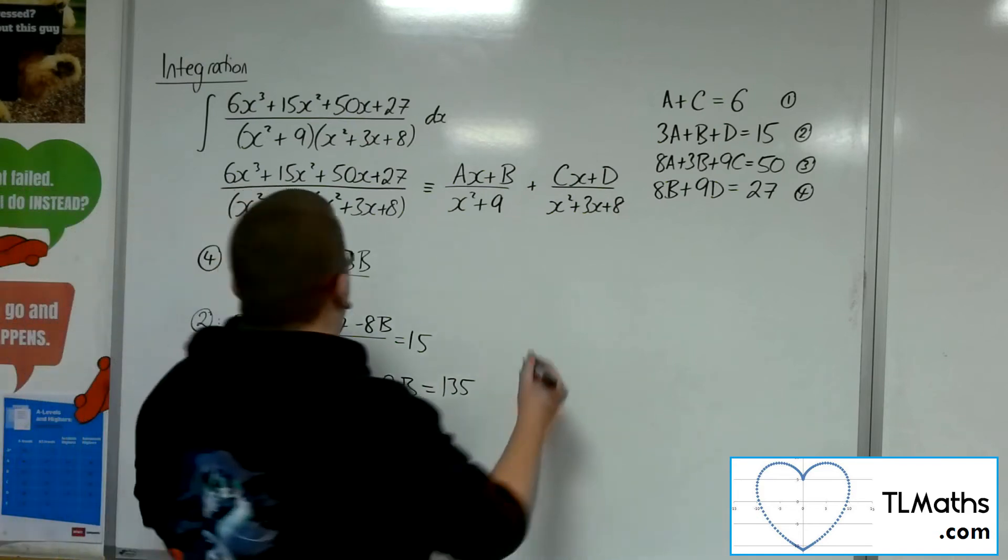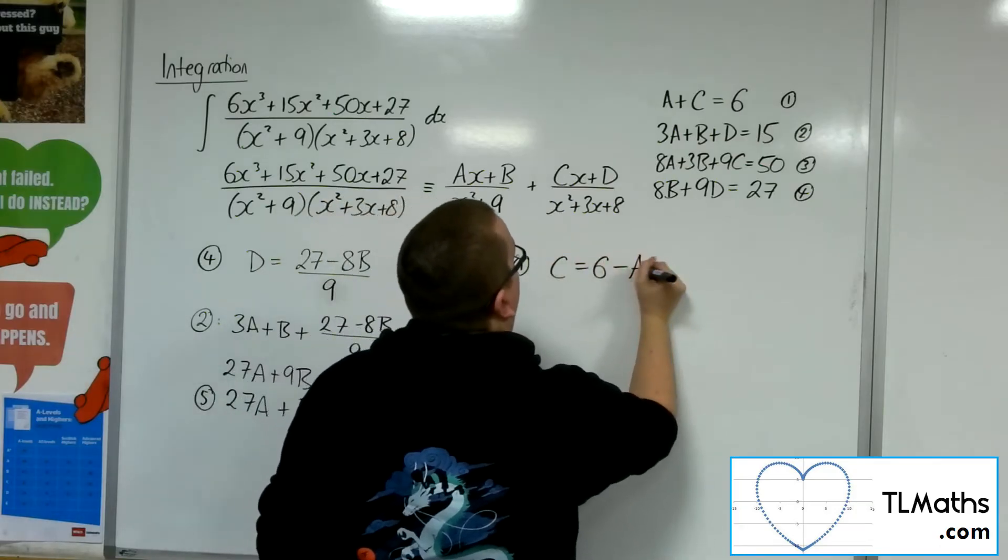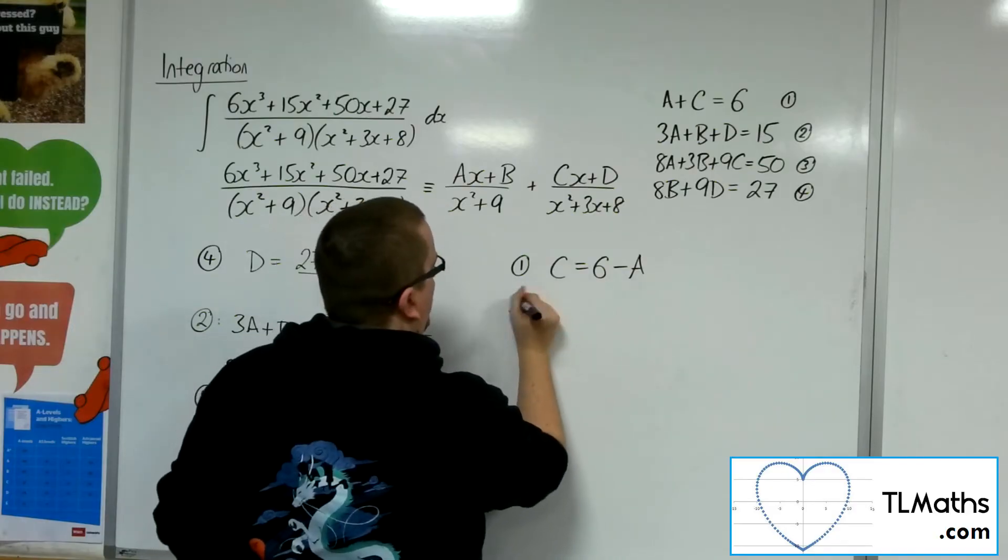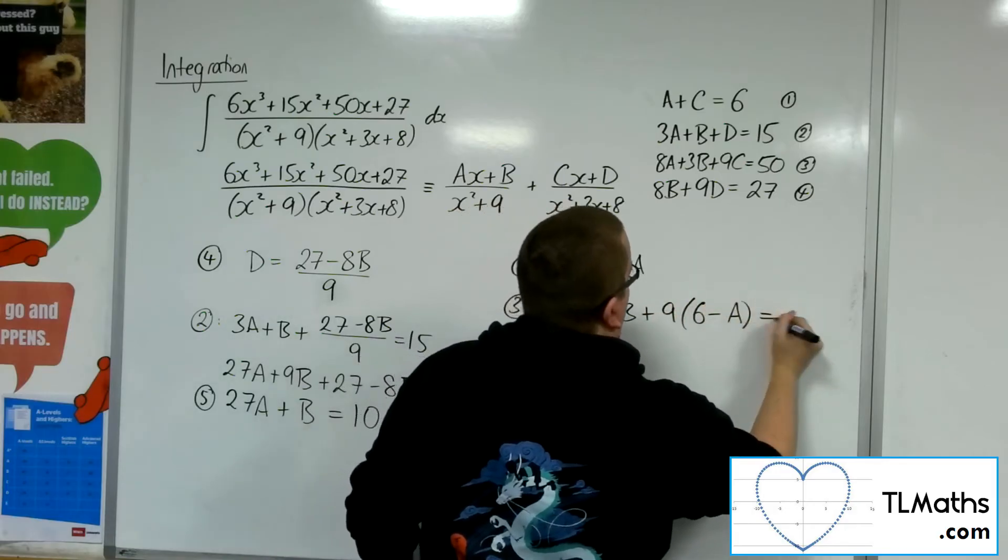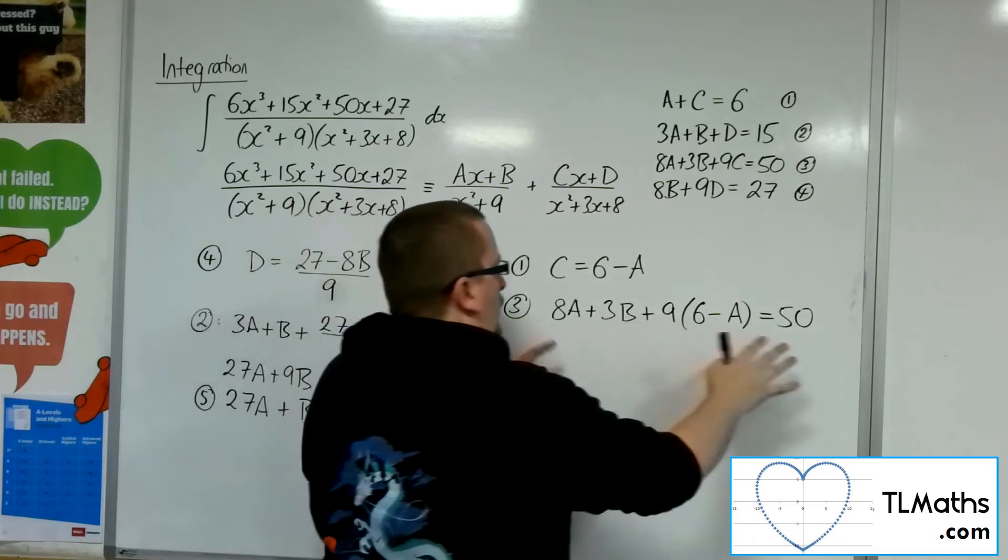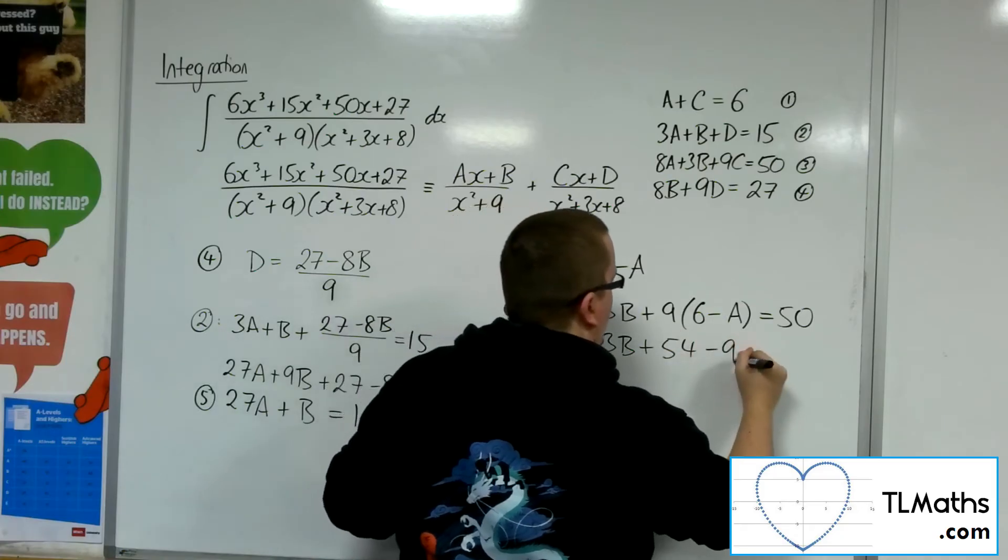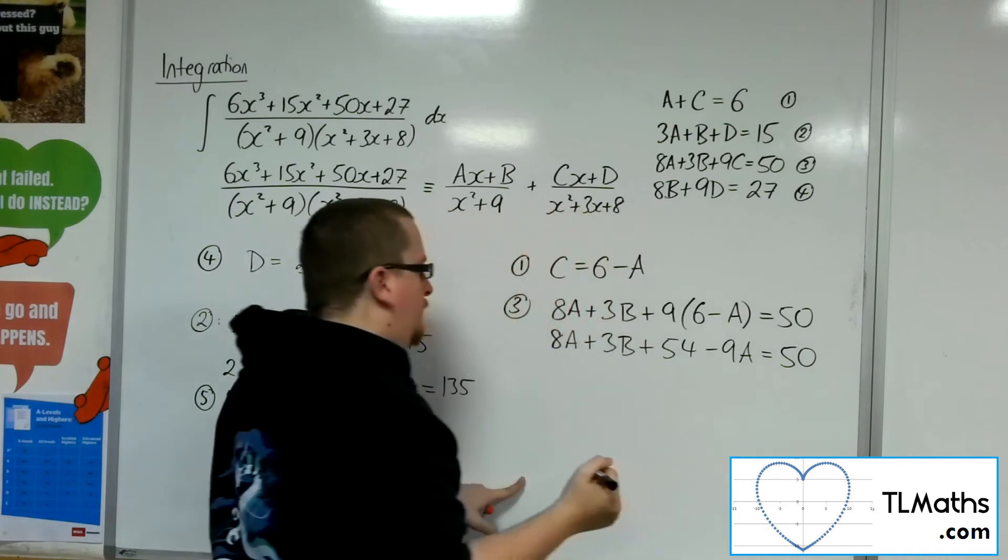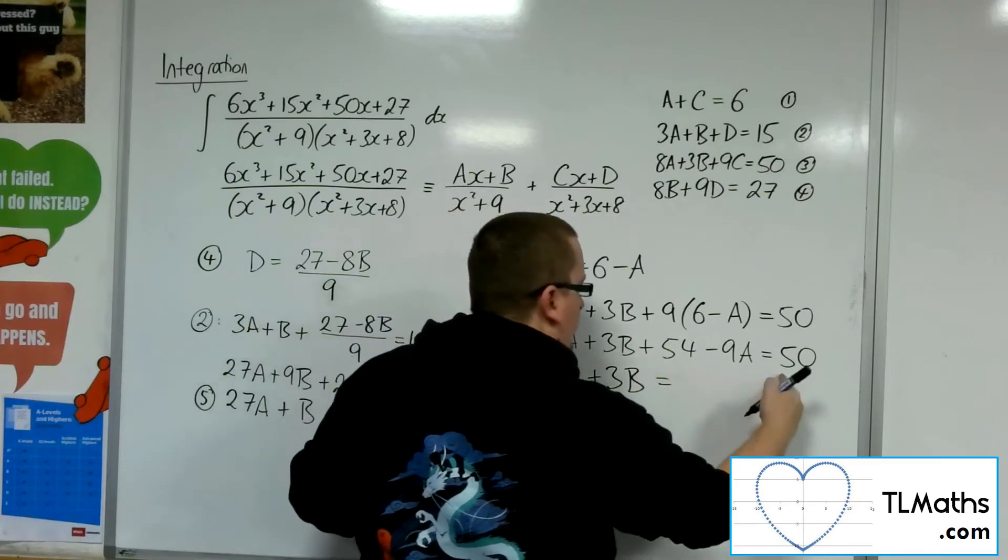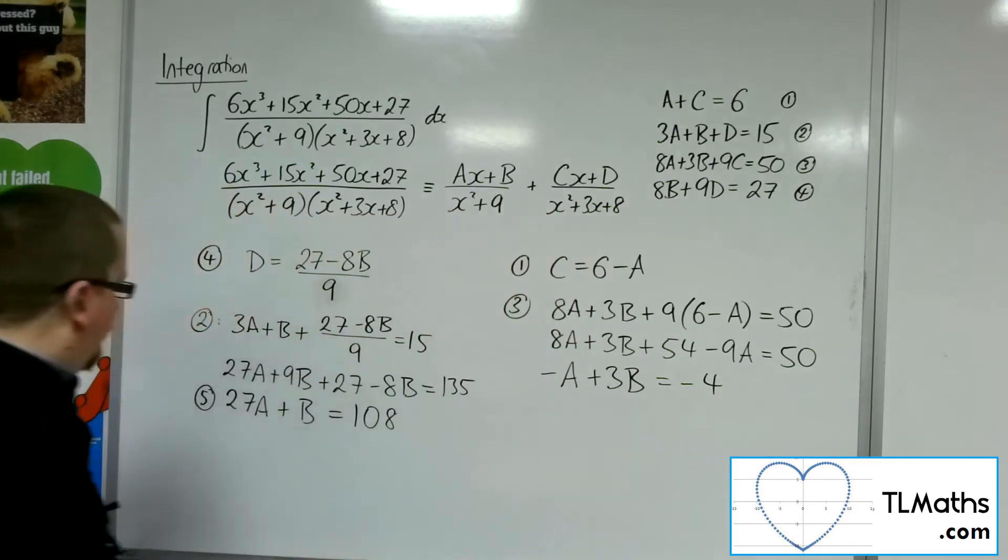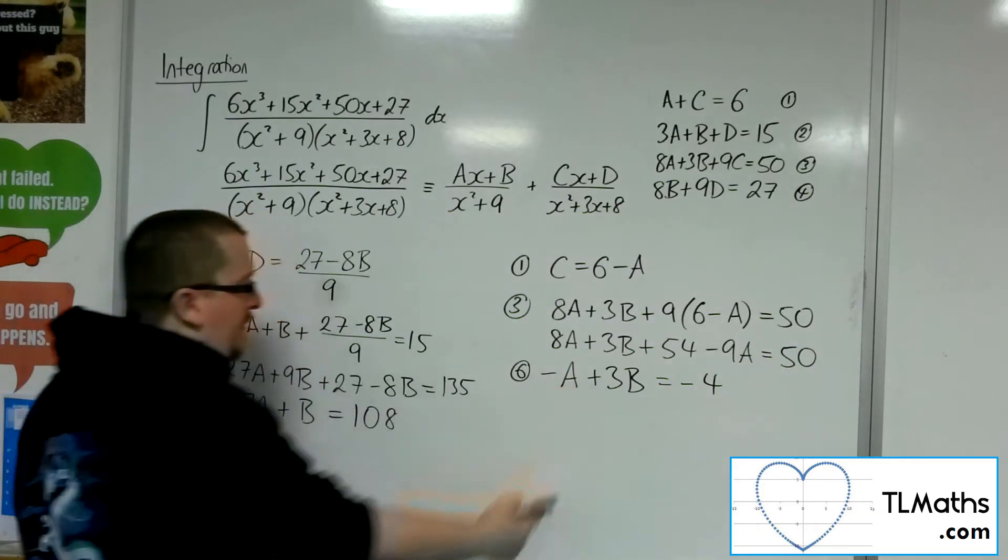So now I'm going to use equation number 1, rearrange that one to get c equals 6 minus a, and I can substitute that into number 3. So number 3 is 8a plus 3b plus 9 lots of c is equal to 50. Multiply this out. So I've got 8a plus 3b plus 9 lots of 6, so 54, take away 9a is equal to 50. So I've got minus a plus 3b, take 54 from both sides, gets me minus 4. So this is equation number 6.